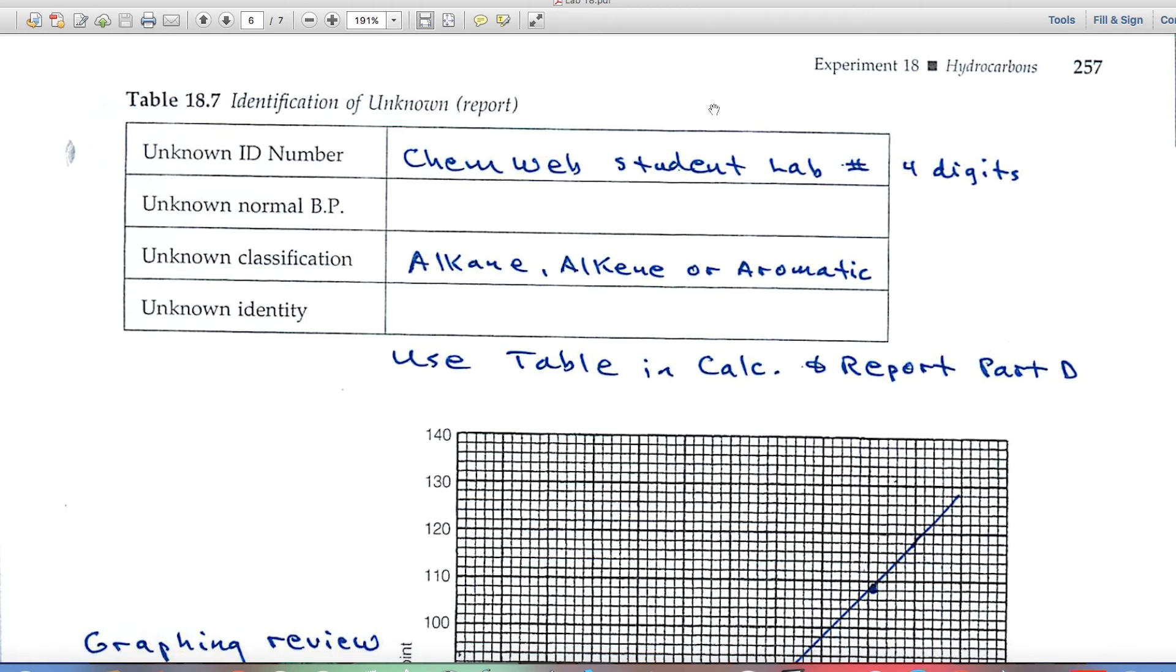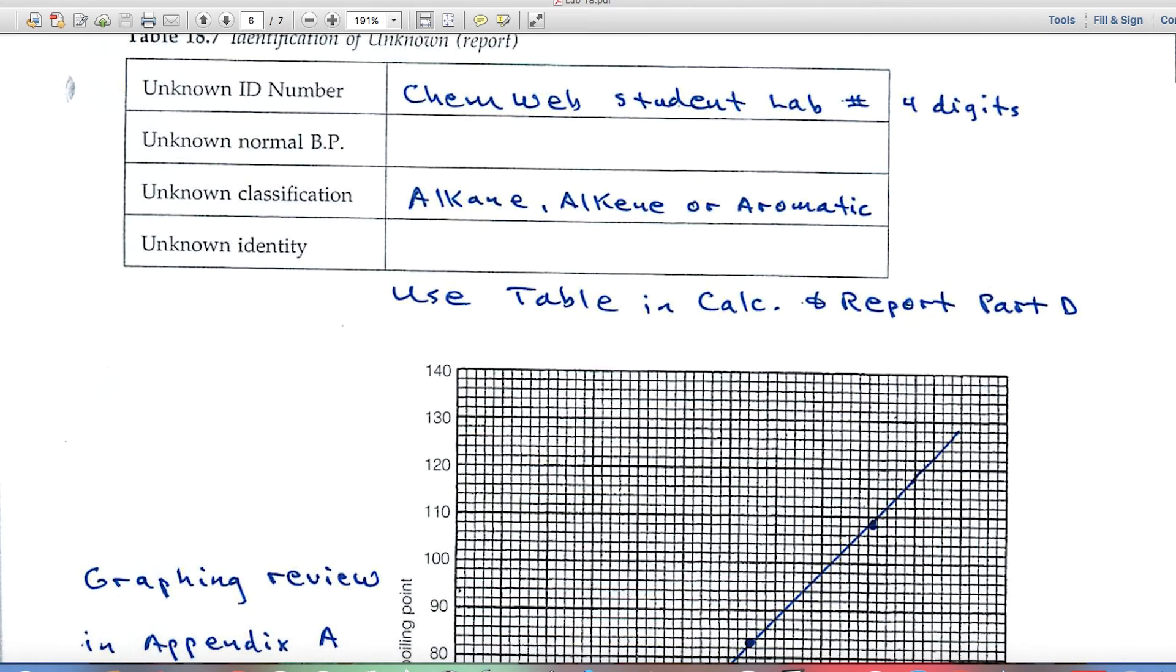Table 18.7 gets down to the identification of the unknown now. The first blank is the ID number, so repeat that. The unknown normal boiling point, and I'll come down to the graph here in a second and show you how you get that.